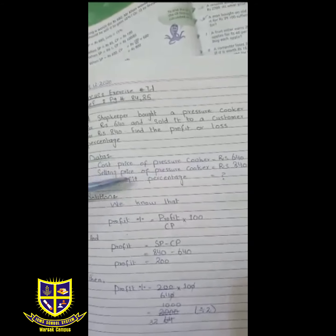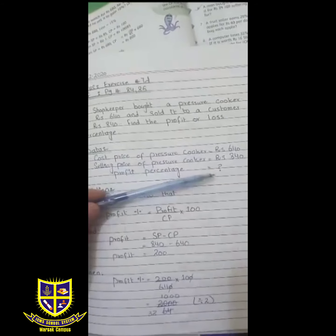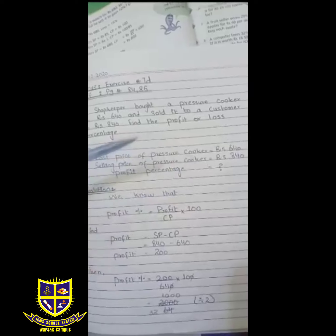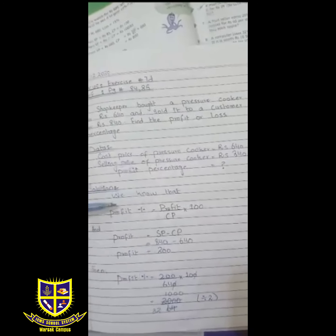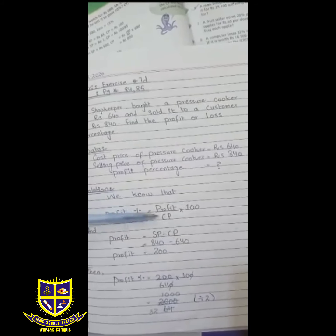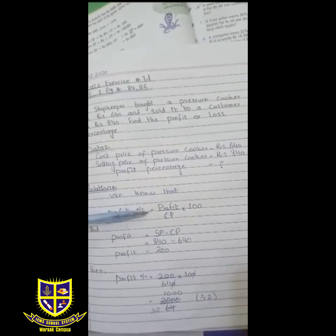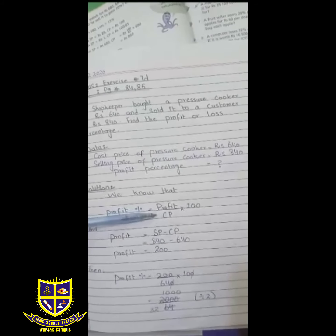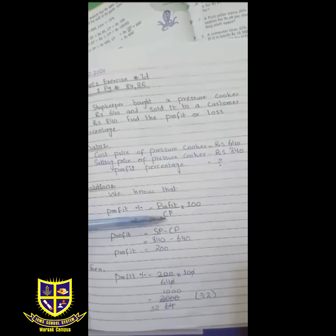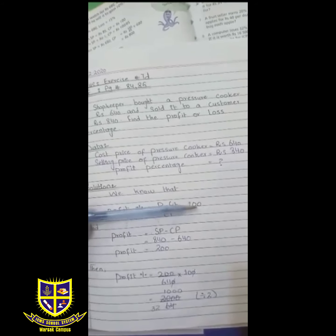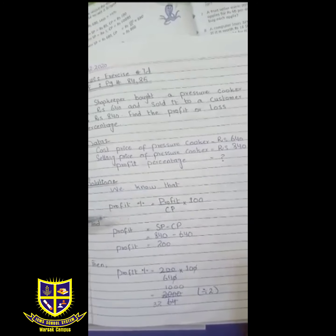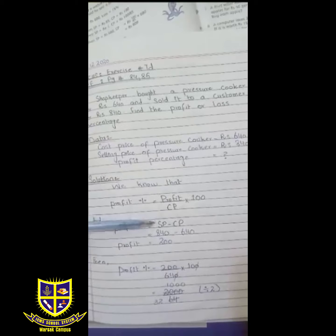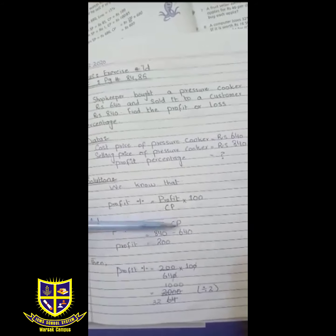Solution: We know that profit percentage is profit divided by CP, which is cost price, multiplied by hundred. This is our profit percentage formula. So first of all, we will find profit. Profit formula is SP minus CP.